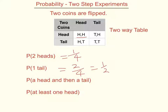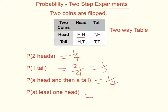The probability of getting a head and then a tail is actually only equal to one over four, because I have to get the head first and then the tail second — I can't get the tail and then the head. And the probability of getting at least one head means I need to have a head in any of the outcomes. All three of these have got a head in them, so the probability of getting at least one head is three out of four.